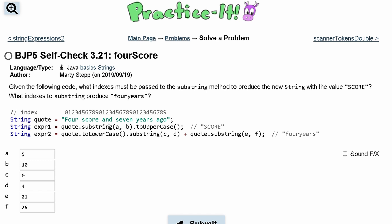So first we are going to look at our expr1, and inside of here we need to print out score. We can look at the quote that we're given, and that is four score and